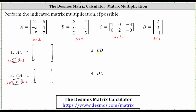Next, we have matrix C times matrix D. Matrix C is a two by three matrix and matrix D is a three by one matrix. Three equals three is true, and we know the product is a two by one matrix — two rows and one column.